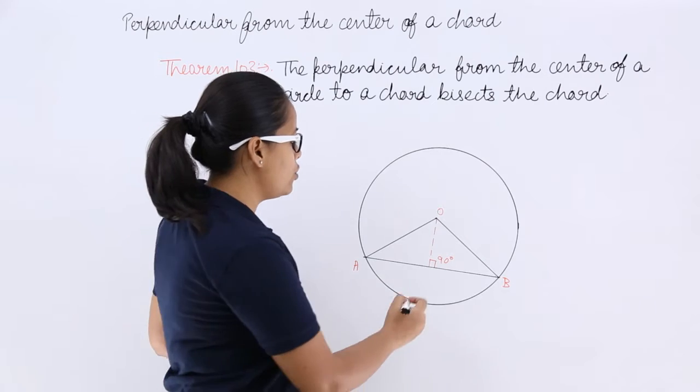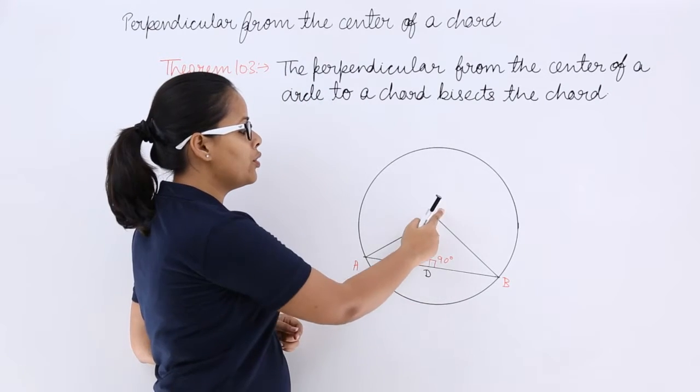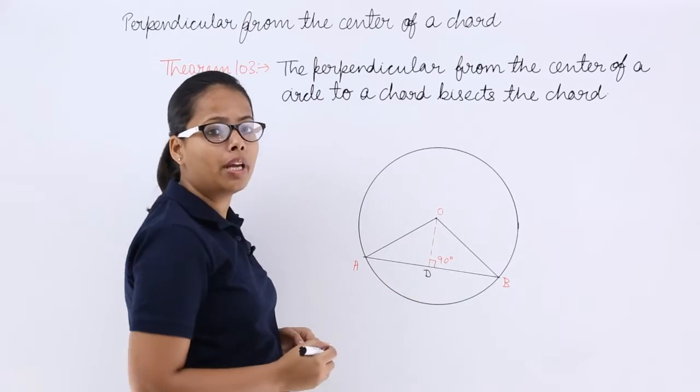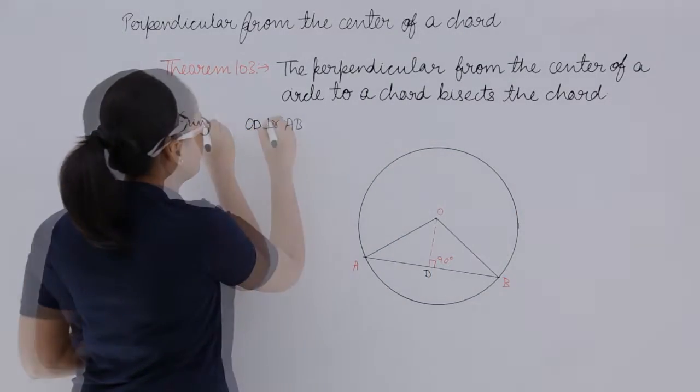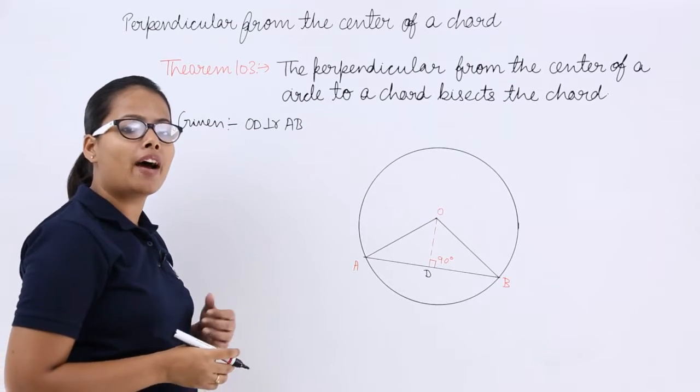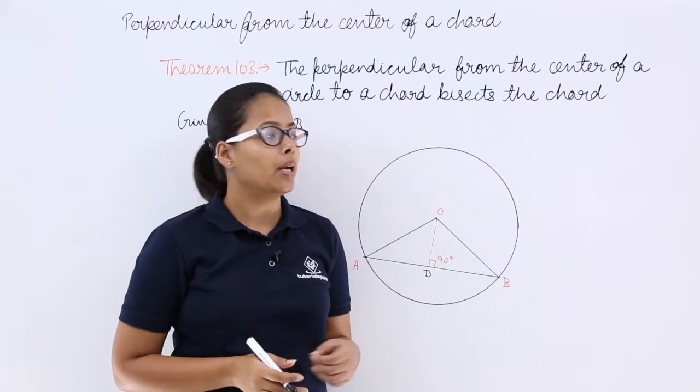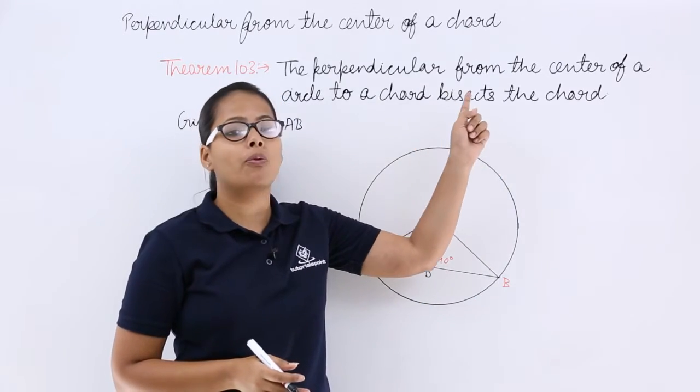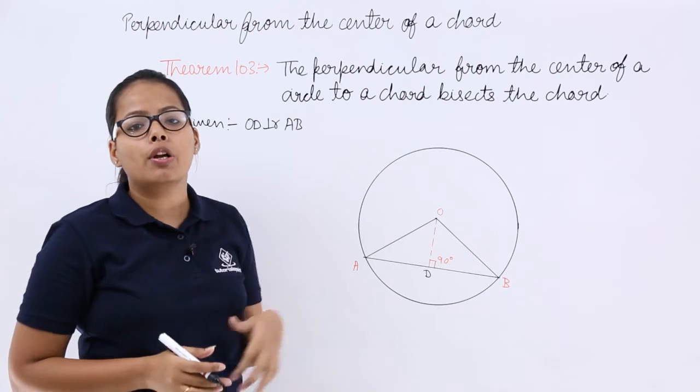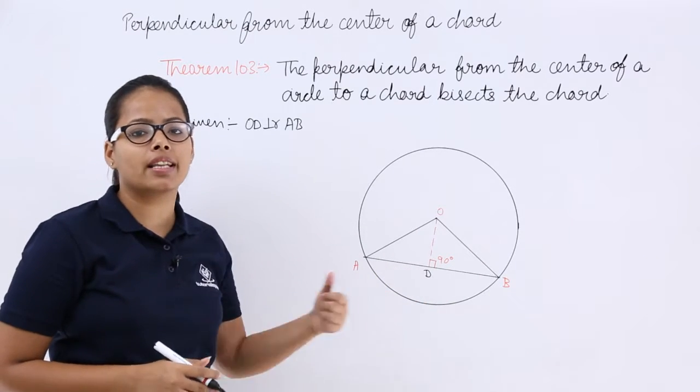It has been given that OD is perpendicular to AB. What you have to prove? You need to prove that AD is equal to BD, because it has been stated that drawing the perpendicular from the center of a circle to a chord will bisect that chord.